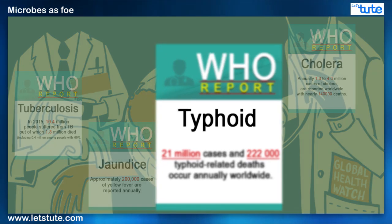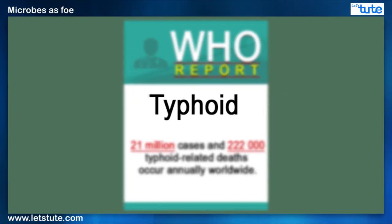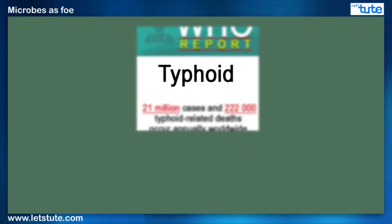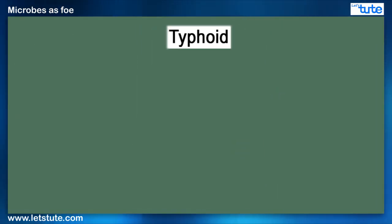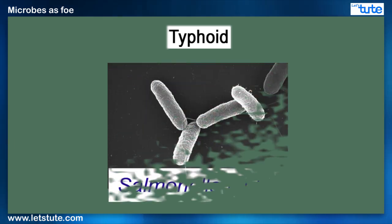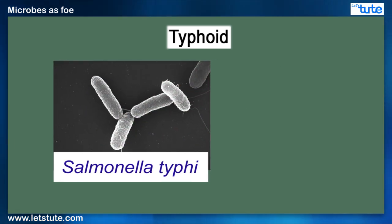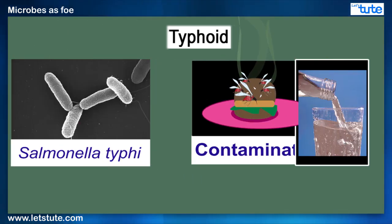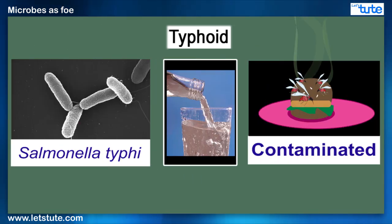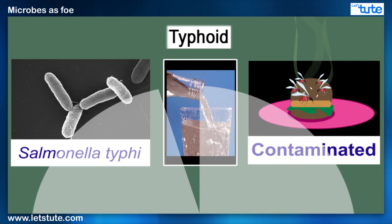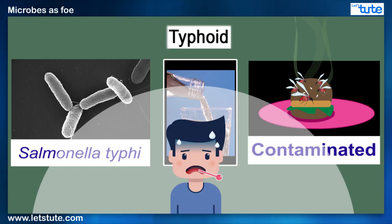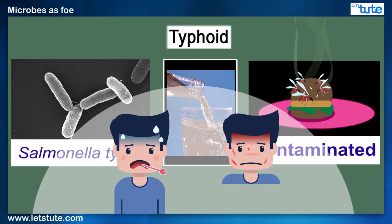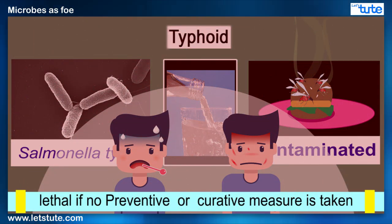Let's consider typhoid as an example for our study. It is caused by a bacterium called Salmonella typhi, which spreads through contaminated food and water. Upon infection, a person suffers from continuous fever and develops rashes on the skin. It can become lethal if no preventive or curative measure is taken.